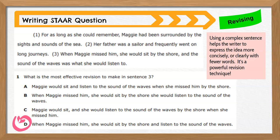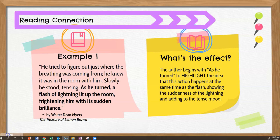So look at answer choice D: when Maggie missed him, she would sit by the shore and listen to the sound of the waves. It's important to understand how good writers make choices about what types of sentences to use for different purposes — you may need to create imagery, describe a character, or increase tension. Let's look at how the author uses a complex sentence in this excerpt from The Treasure of Lemon Brown: as he turned, a flash of lightning lit up the room, frightening him with its sudden brilliance. The author begins with as he turned to highlight that this action happens at the same time as the flash, showing the suddenness of the lightning and adding to the tense mood. This was an intentional choice by the author.